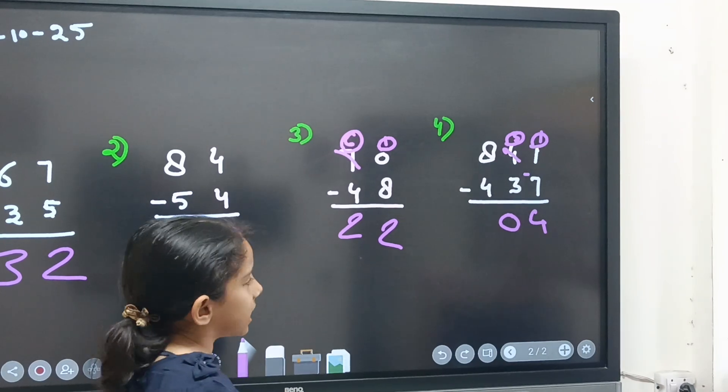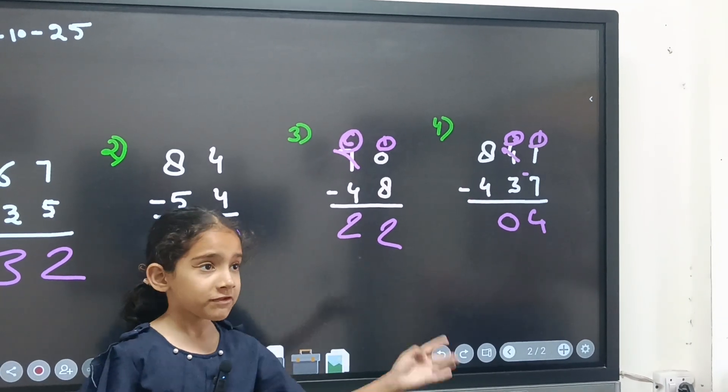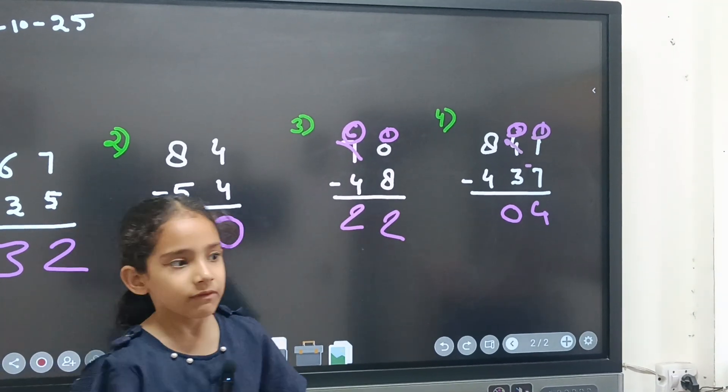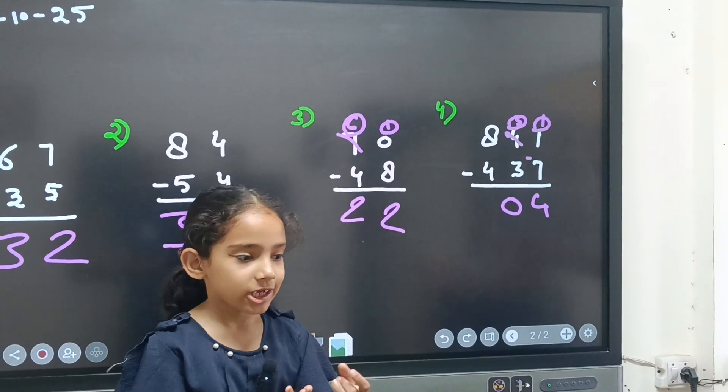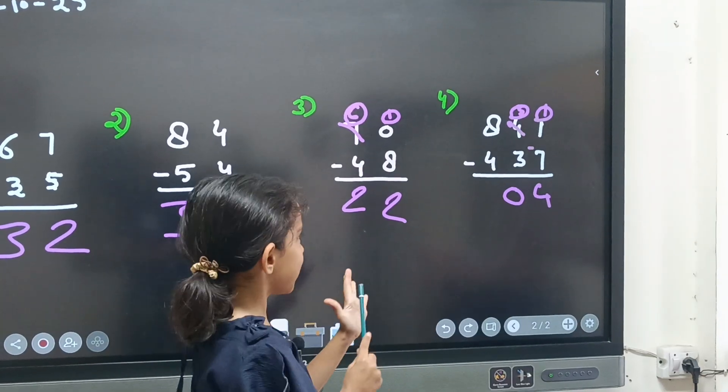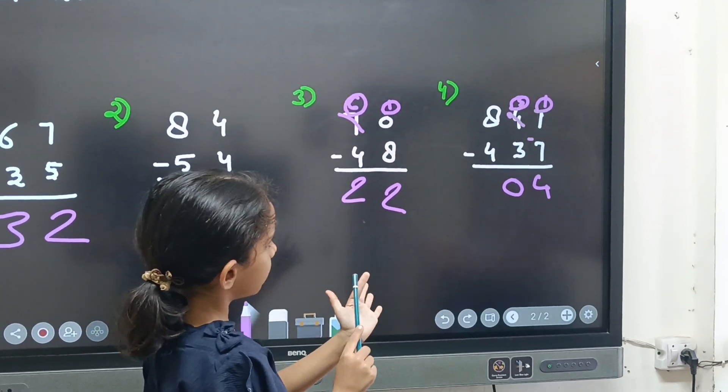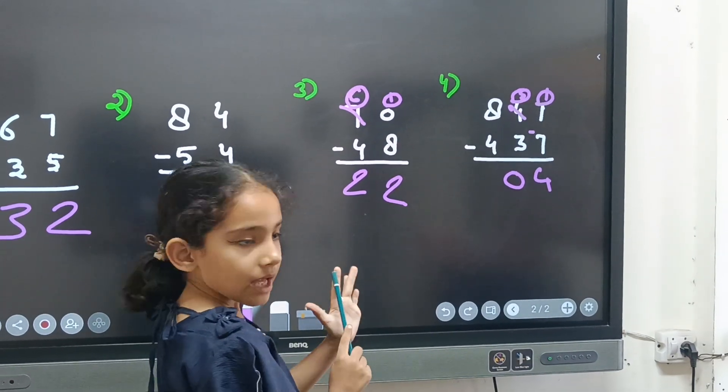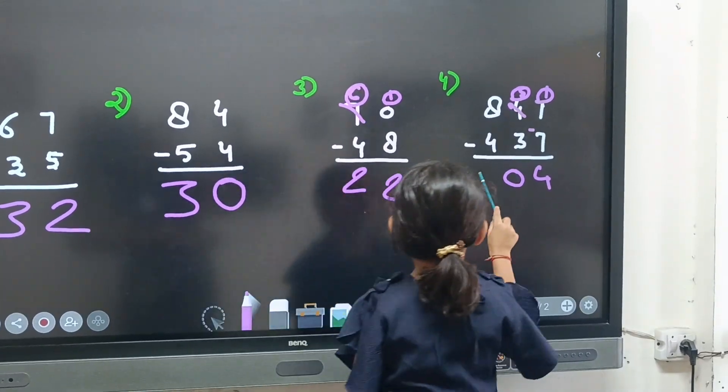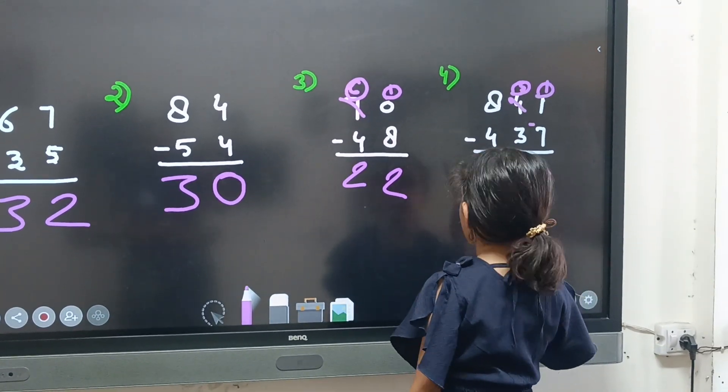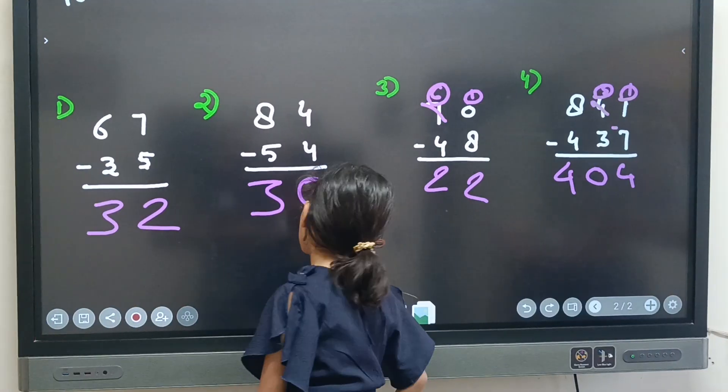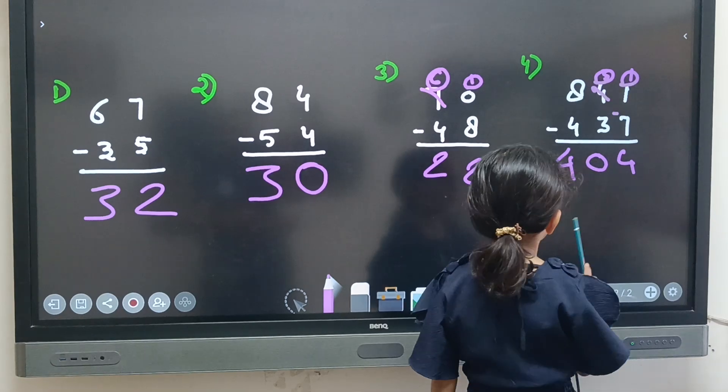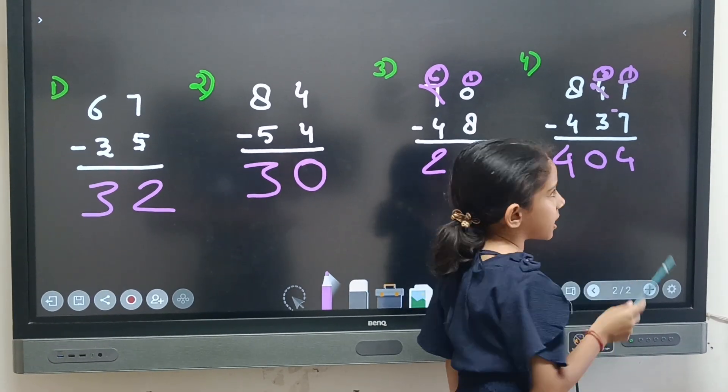Next question, 8 minus 4. Now we have only 5 fingers. So we want to put our pencil and count it. But we can count in this. 1, 2, 5, 6, 7, 8, 3, 4. So answer is 404. First question answer 32. Second question answer 30. Third question answer 22. Fourth question answer 404.